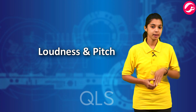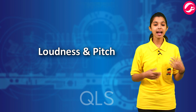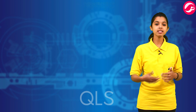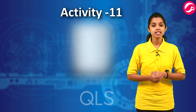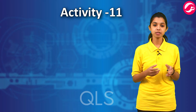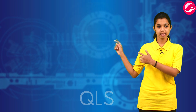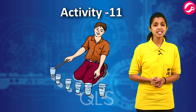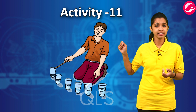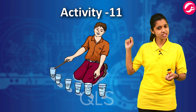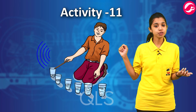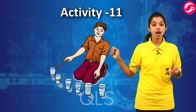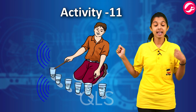Loudness and pitch — this is our next topic. Let's do activity number 11. Take a metallic tumbler and a tablespoon. Strike the tablespoon gently on the rim of the tumbler. A sound is produced. Now bang the spoon with more force — the sound produced is louder.